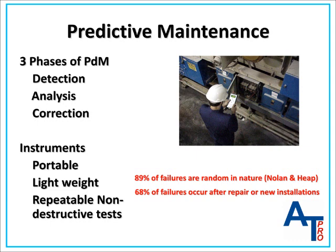Once a faulty machine is identified, the analysis phase is used to more thoroughly identify the problem. This phase may require additional testing or even another technology to determine the severity and cause of the failure. The correction phase requires replacing or repairing the failure and verifying the correction. This is also the ideal time to correct the reason for the failure.